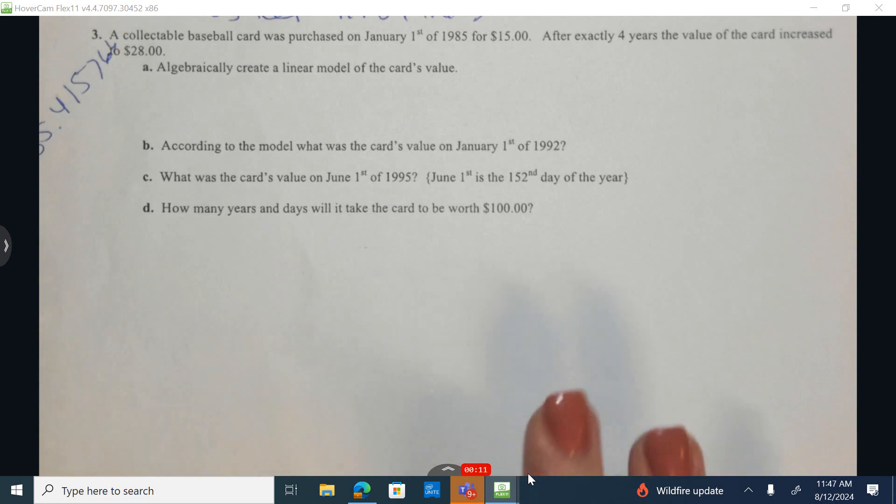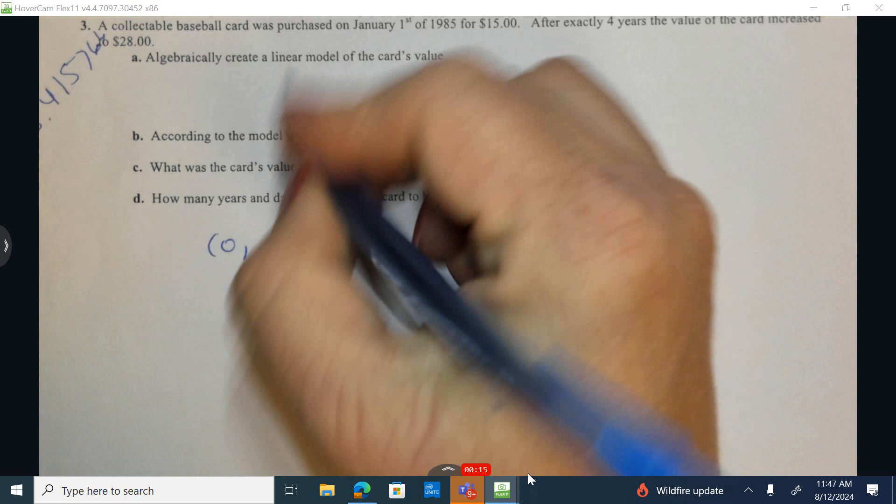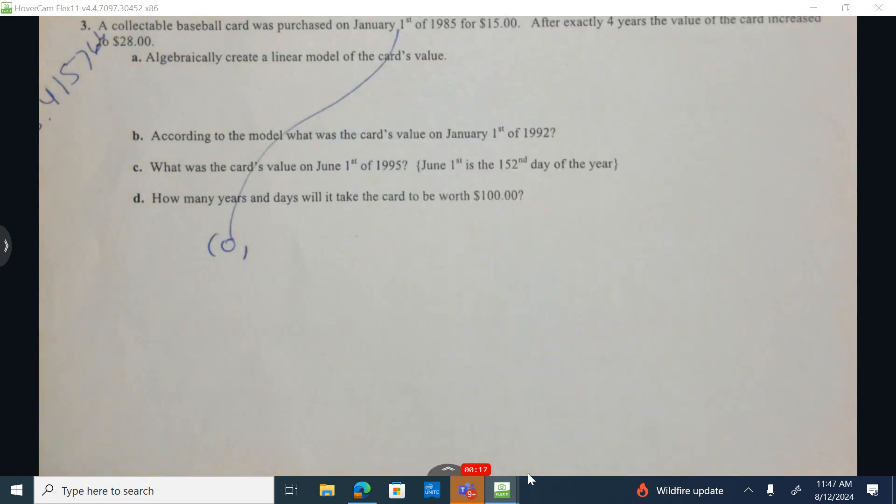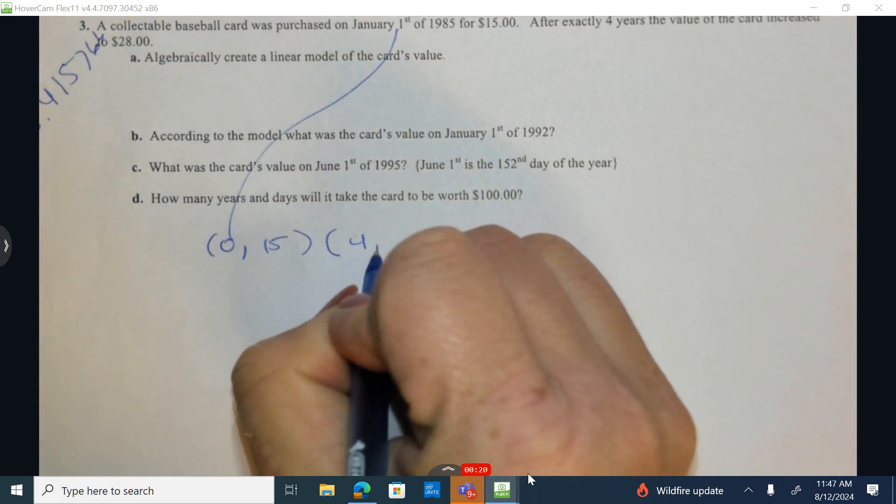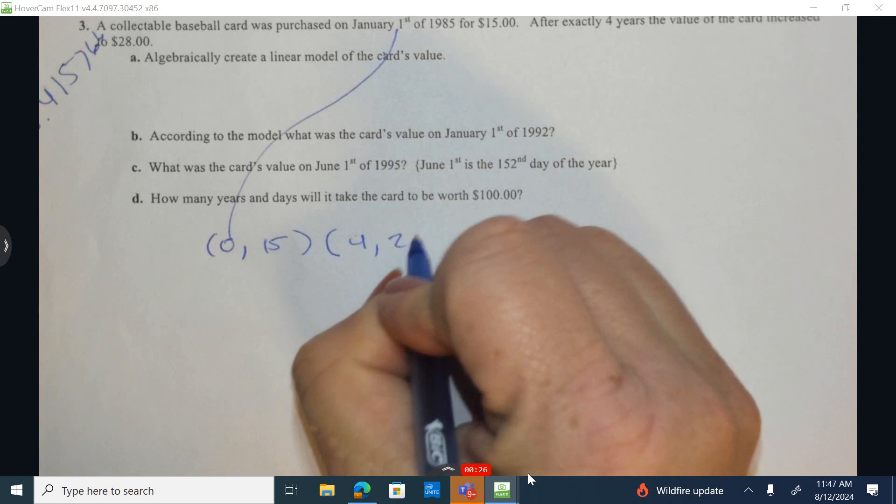Let's come up with an algebraic model of the card's value. So we know that the initial time, which is January 1st, 1985, is worth $15. We know four years after this particular date, which would be January 1st, 1989, is increased to $28.